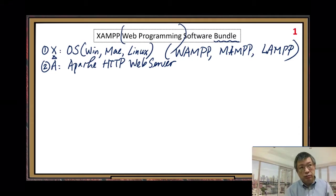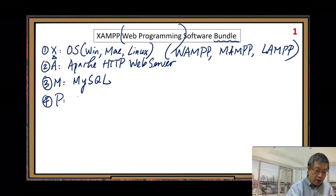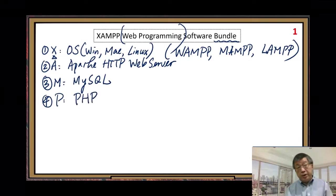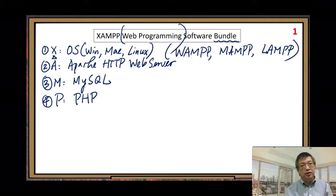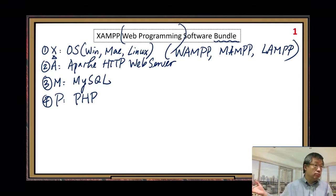I will explain this relationship a little more later. The third component is M — MySQL database. The fourth one, the first P, is PHP — a server-side programming language or scripting language. Why do we need PHP? Because the tool we use to manage MySQL databases is written in PHP. That's the reason we need PHP.